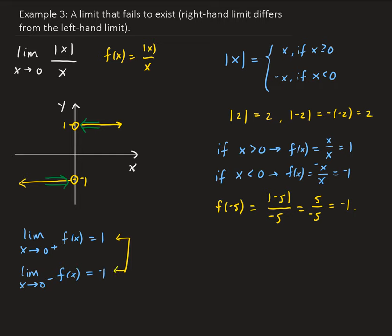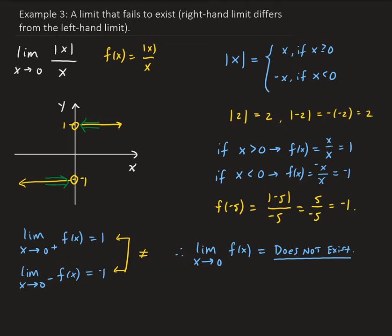Clearly, these two limits are not equal. The left-hand and right-hand limits both exist; however, the overall limit does not exist. So the limit as x approaches 0 for this function does not exist, because the left-hand and right-hand limits are not equal. For the overall limit to exist, the left-hand and right-hand limits must be equal — they must approach the same value — and clearly in this example that does not happen.